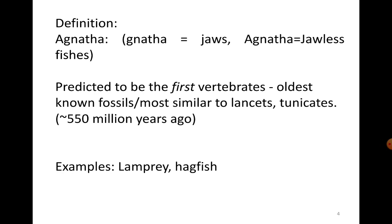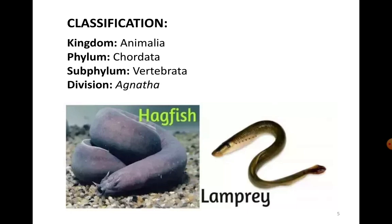They existed some 550 million years ago. The living examples of these Agnathans are the lampreys and hagfishes. They belong to the phylum Chordata, subphylum Vertebrata, and division Agnatha, because they are jawless, and they come under class Cyclostomata.